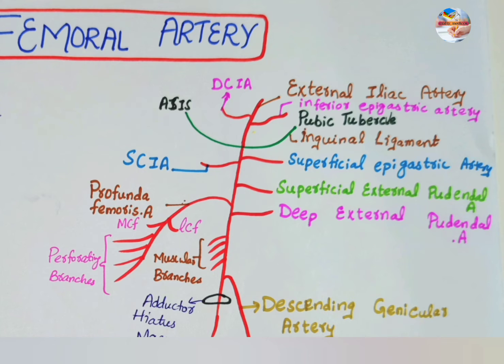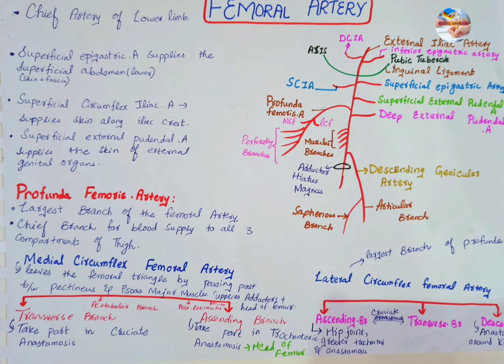The three deep branches include the profunda femoris artery, the deep external pudendal artery, and various muscular branches. The profunda femoris artery is the largest branch of the femoral artery and is the chief artery for the blood supply to all three compartments of the thigh.